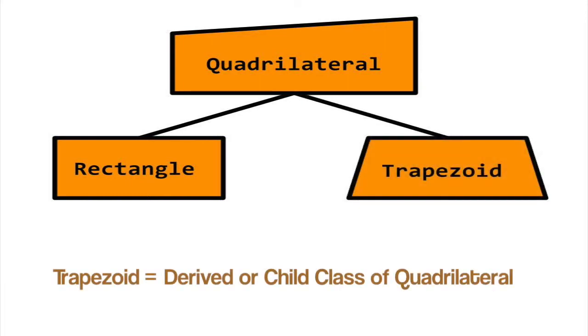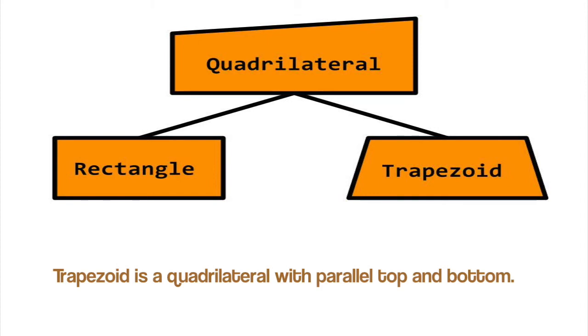Let's make another child class of Quadrilateral called Trapezoid. Like Rectangle, Trapezoid has the attributes of Quadrilateral. Trapezoid inherits the traits of Quadrilateral, plus the trait of having a parallel top and bottom.